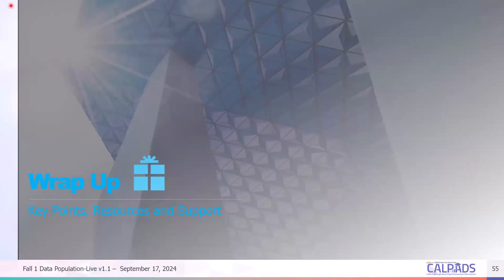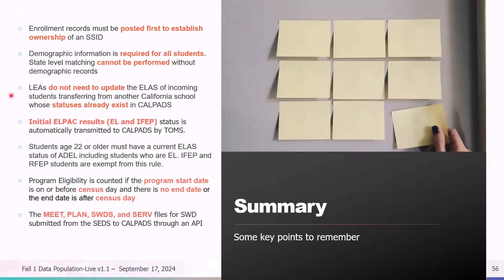Let's go ahead and wrap this thing up. Here is the summary of some key points that we covered today. Enrollment records — that's SENR records, or SSID enrollment — must be posted first in the submission order in order to establish ownership of the SSID and submit any subsequent records in the student profile. Next, demographic information is required for all students, and state-level matching cannot be performed without the demographic record, which is the student information or SINF record.